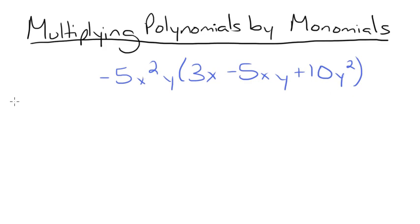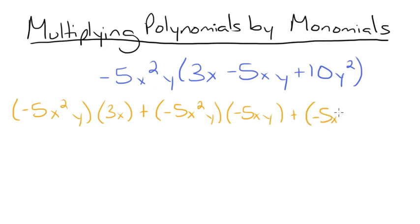So we'll multiply negative 5x squared y by 3x. And then add negative 5x squared y times negative 5xy. Don't forget to pull the sign right here. Plus negative 5x squared y times 10y squared.